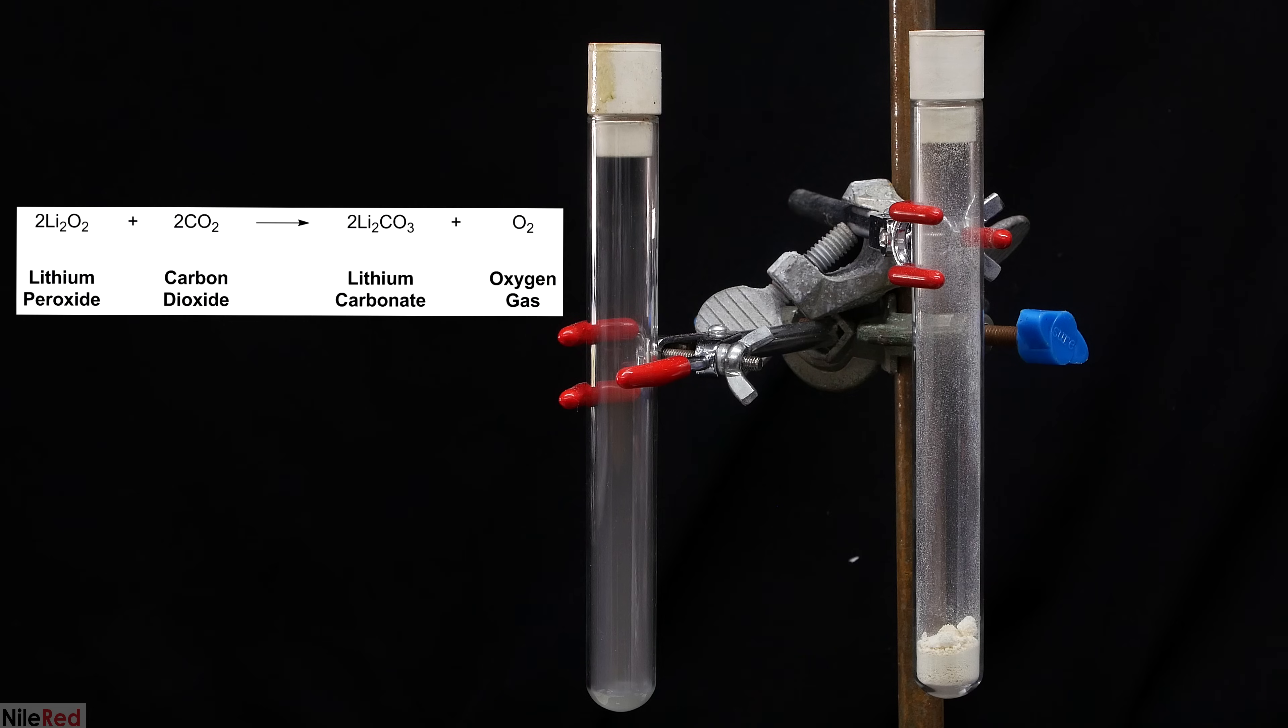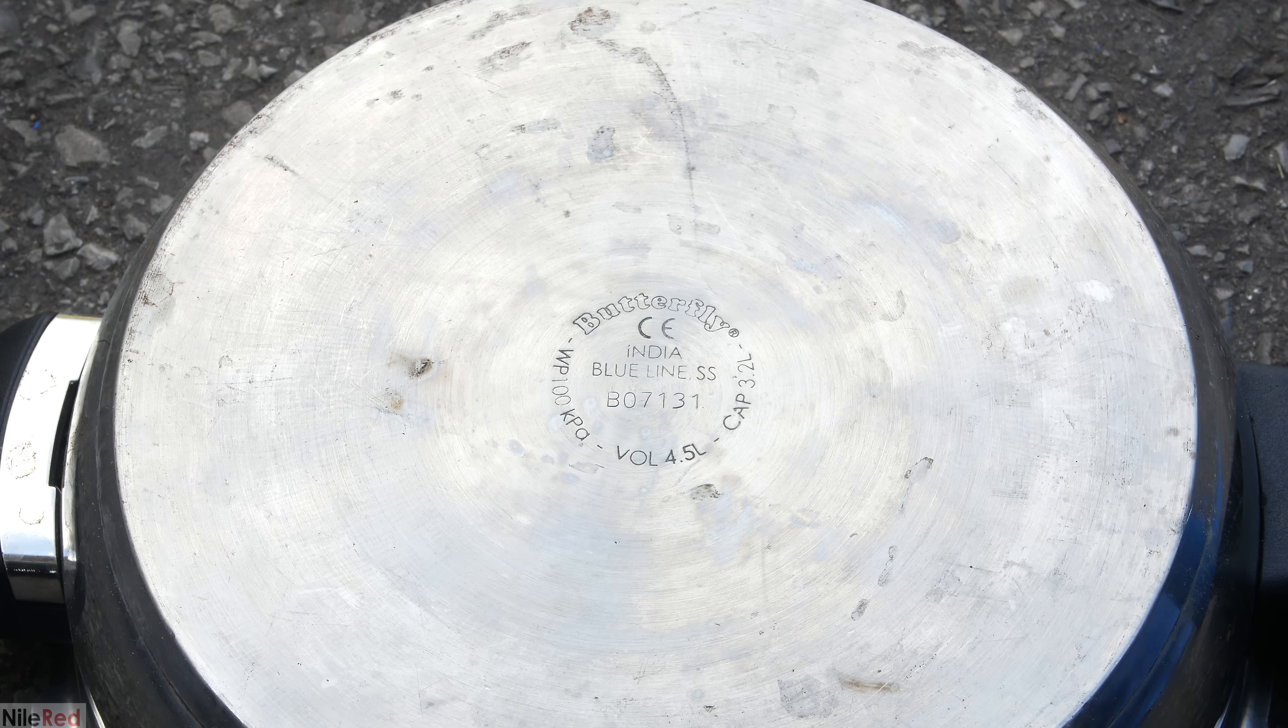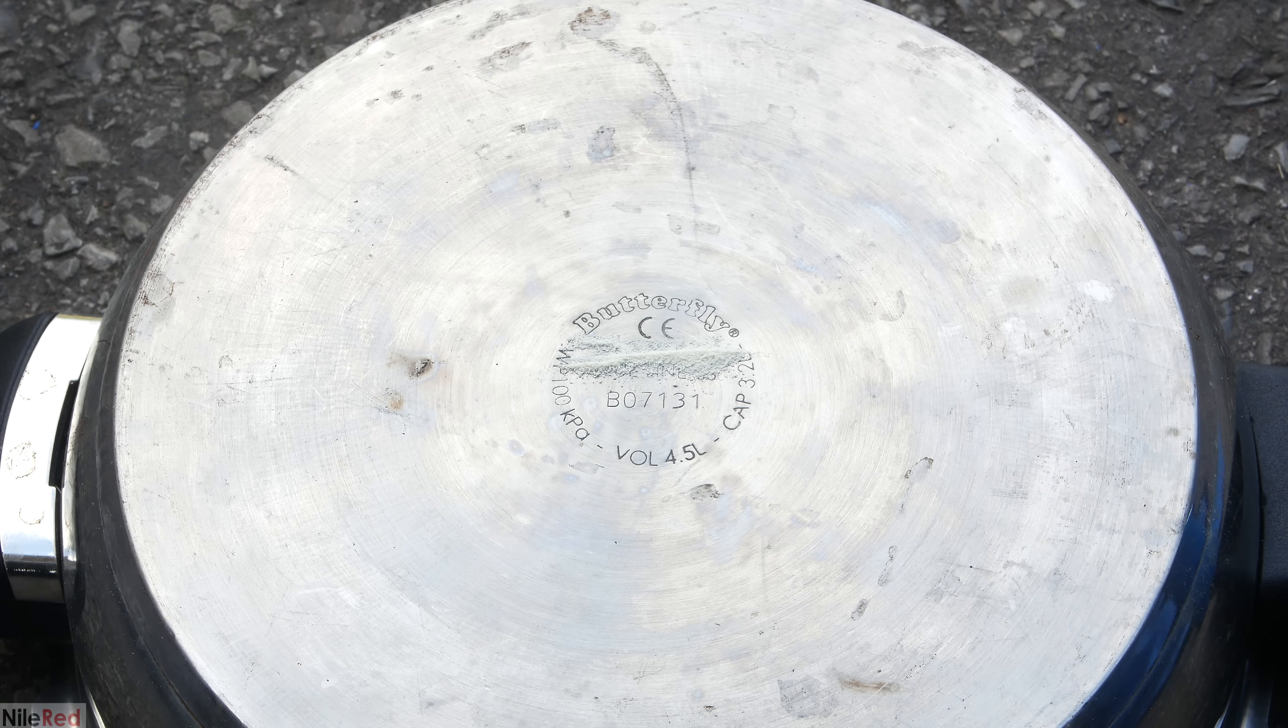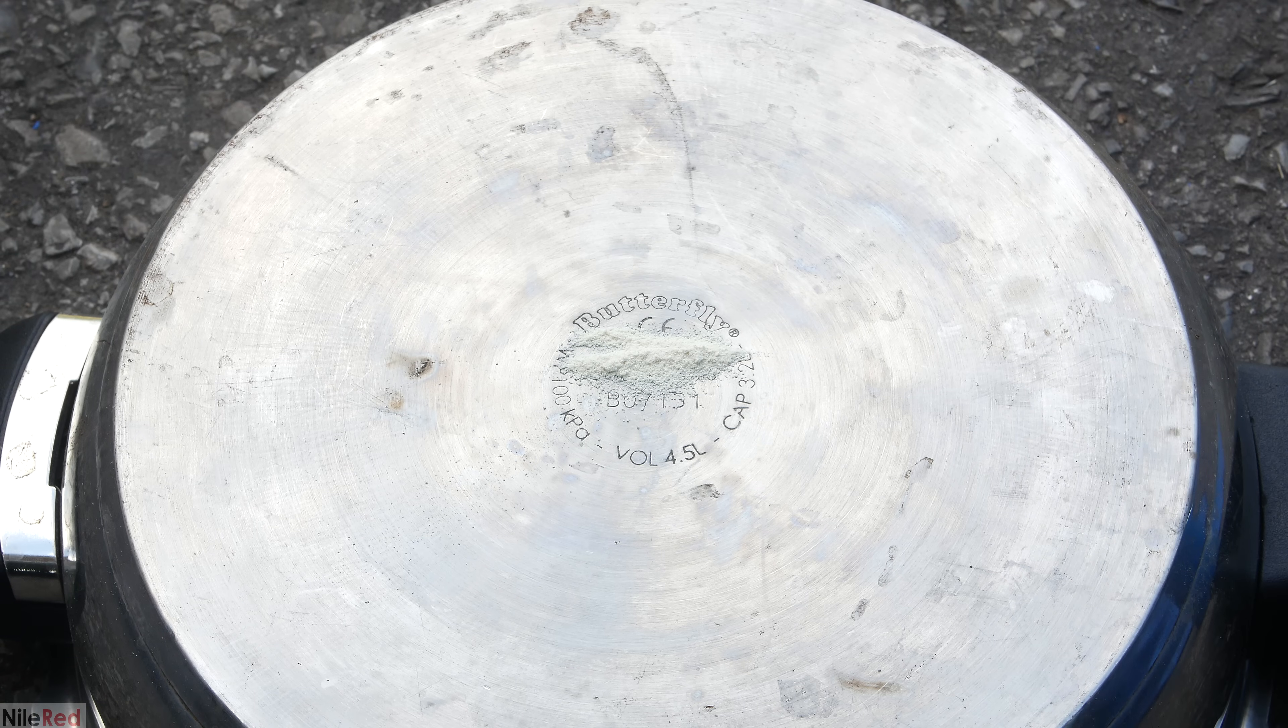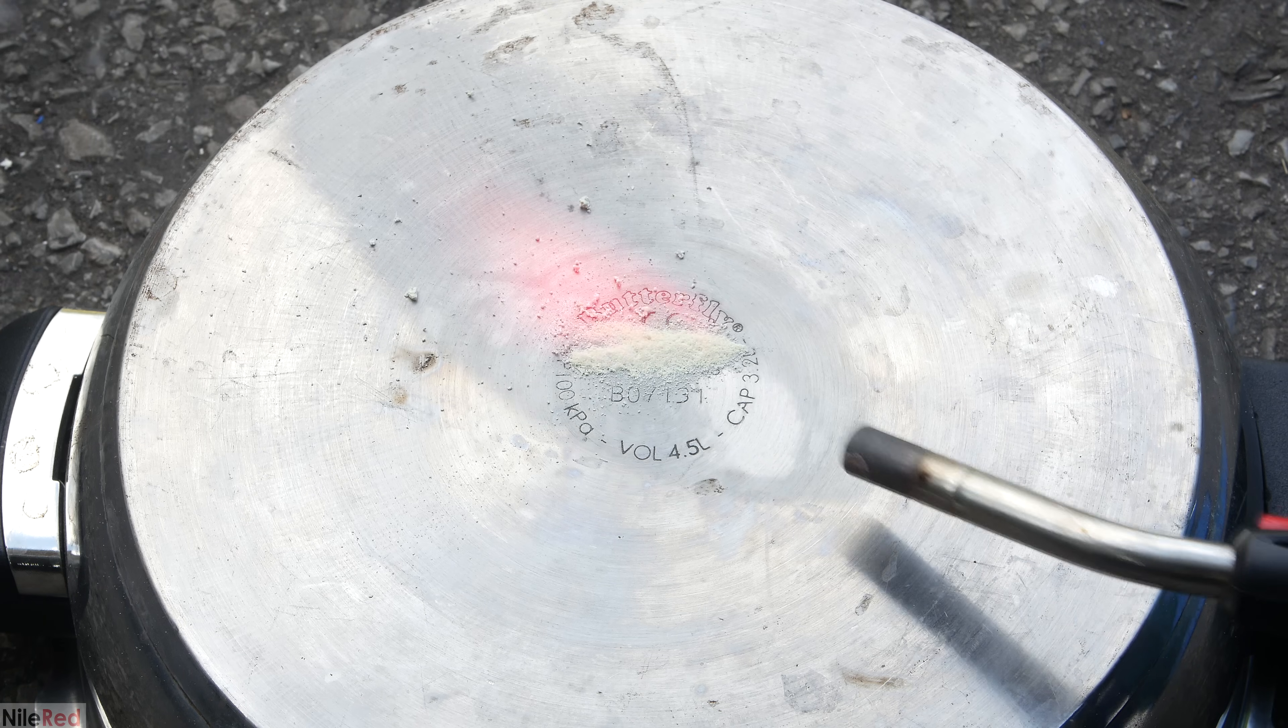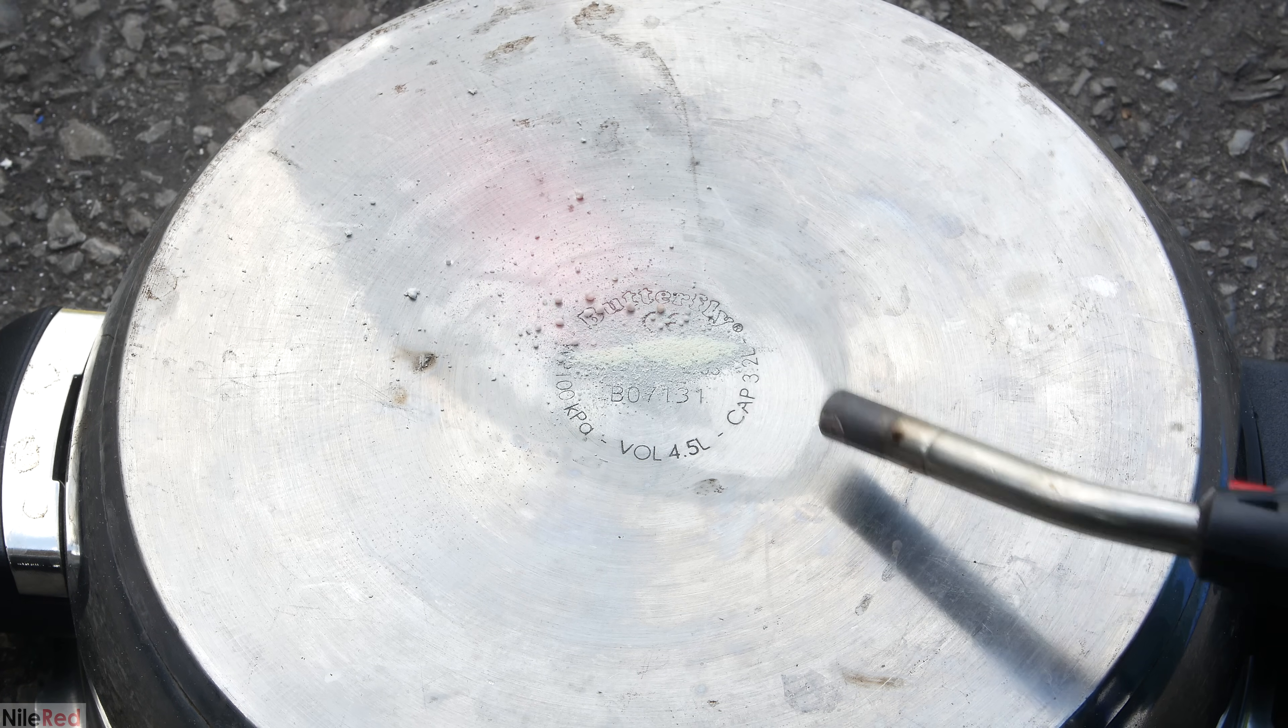Anyway, with that being said, I'm going to move on and do some flame tests. For the flame test, I put a little bit of the lithium peroxide on the bottom of a pan, and then I shot it with a blow torch. The important thing to notice here is the characteristic crimson red color of lithium.